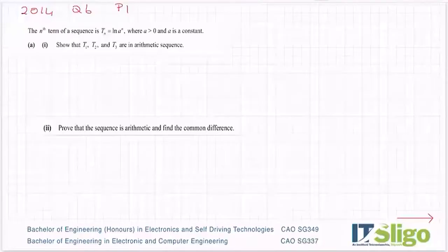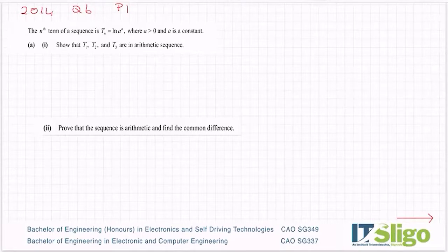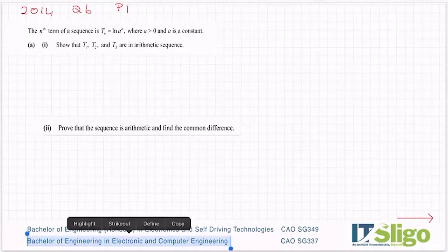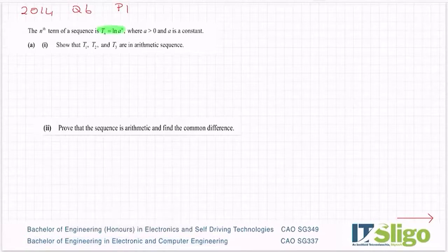Okay let's have a look at the 2014 question 6. It was a mixture of logs and sequences and series, so it's the first question we're really going to do on sequence and series. The nth term of a sequence is tn equal to ln of a^n where a is greater than zero and a is a constant.